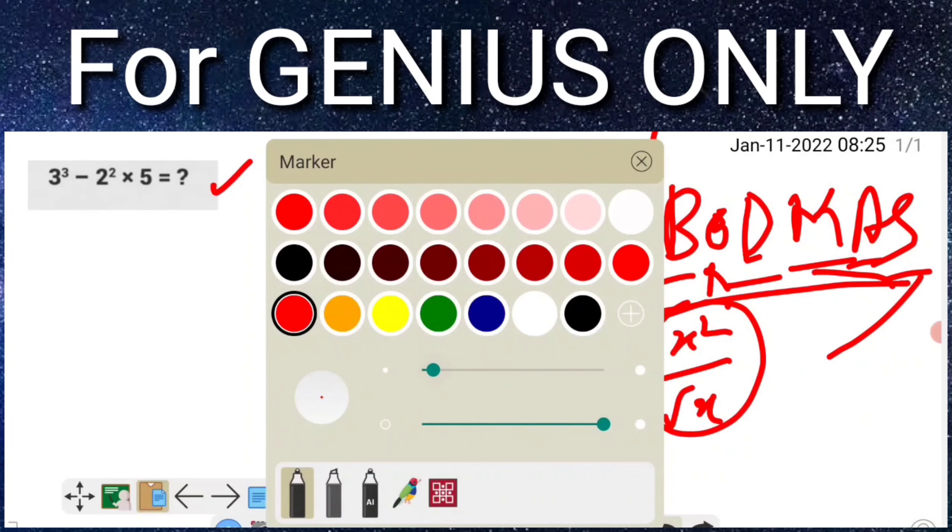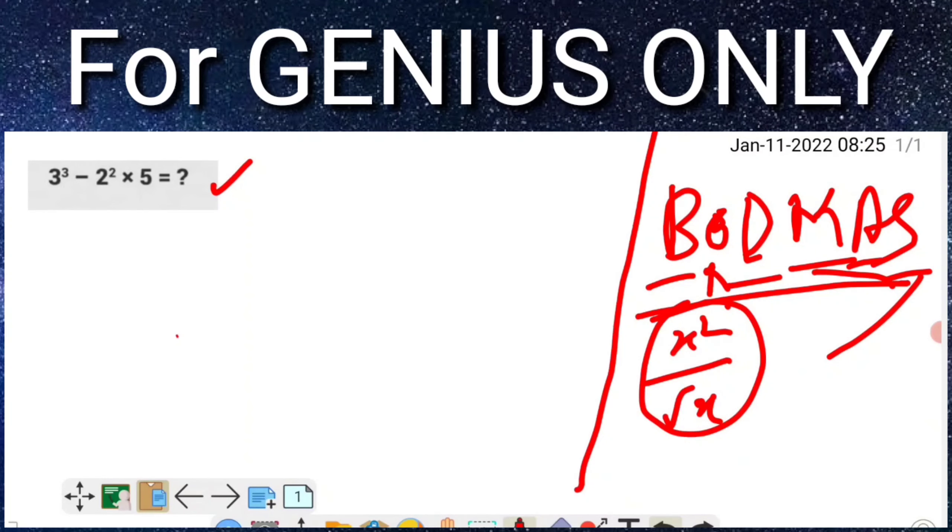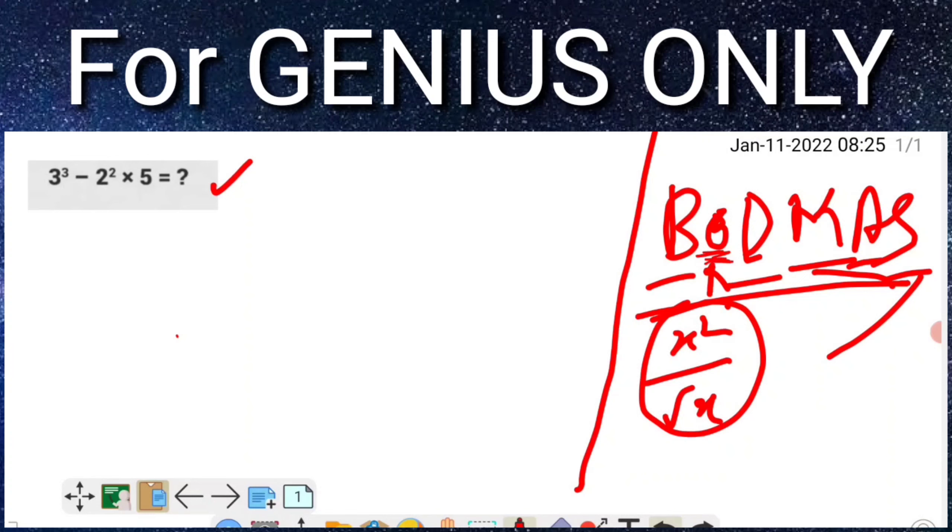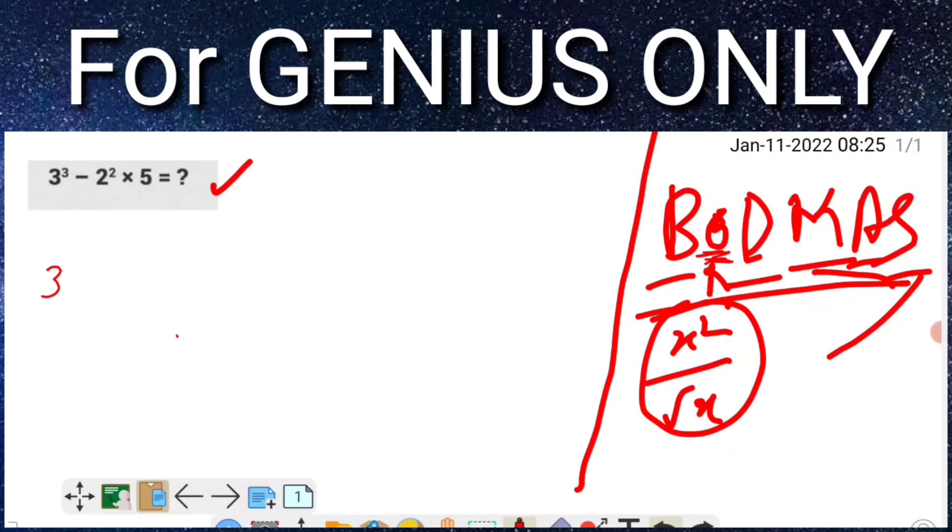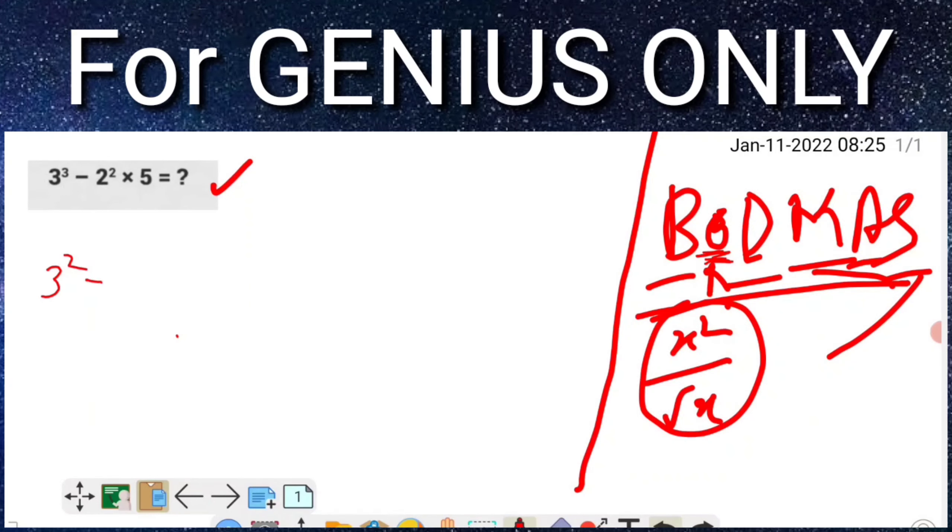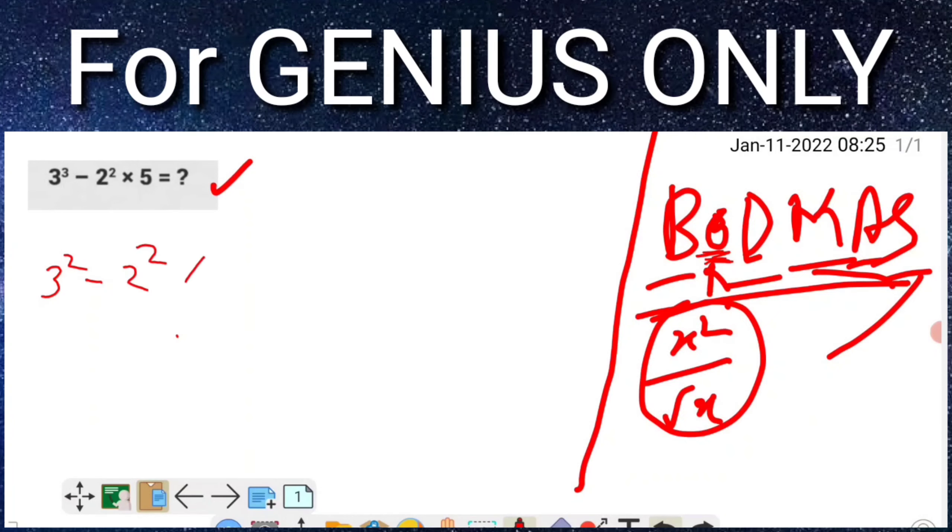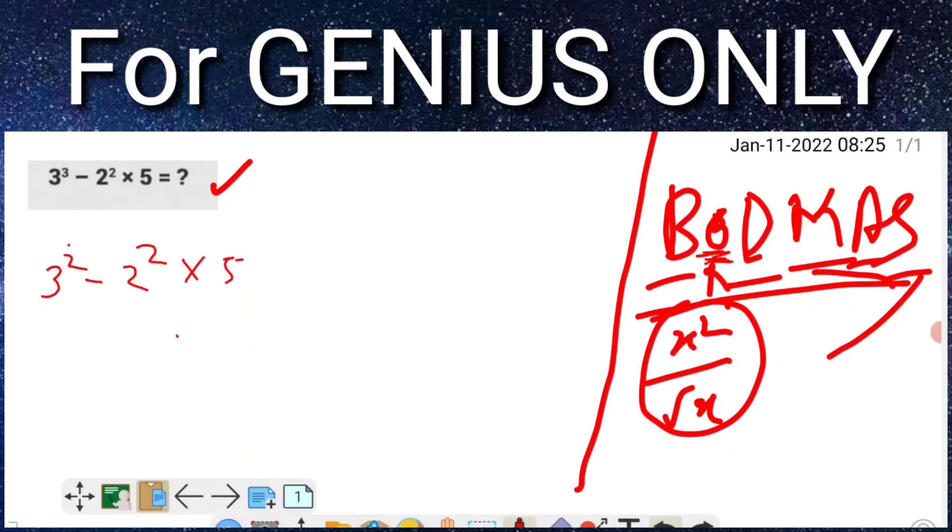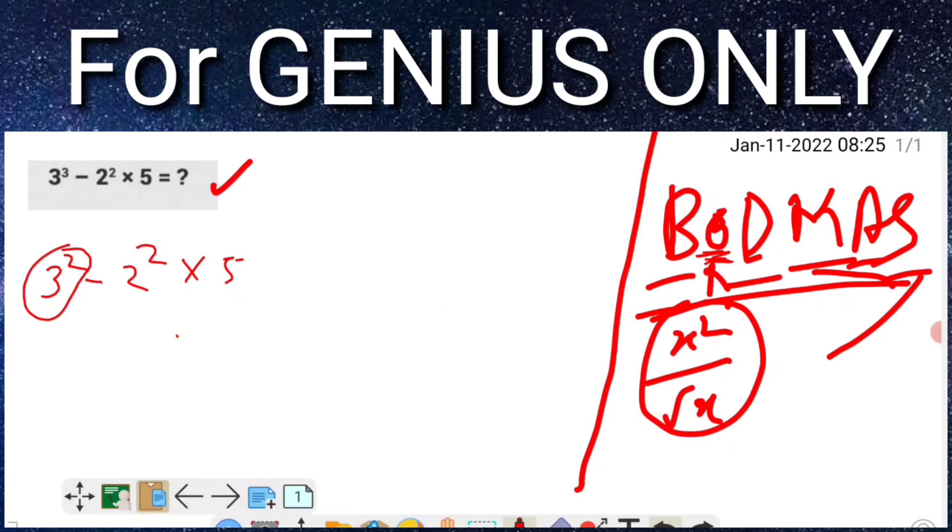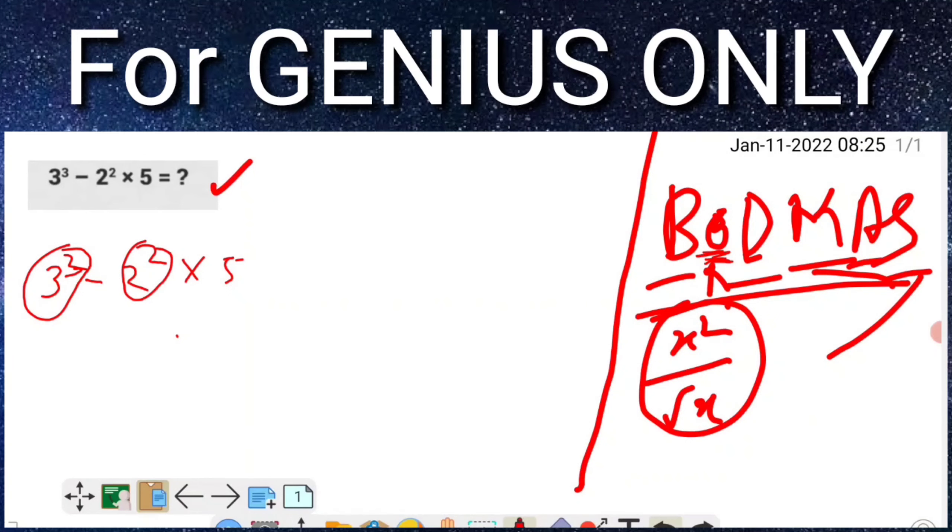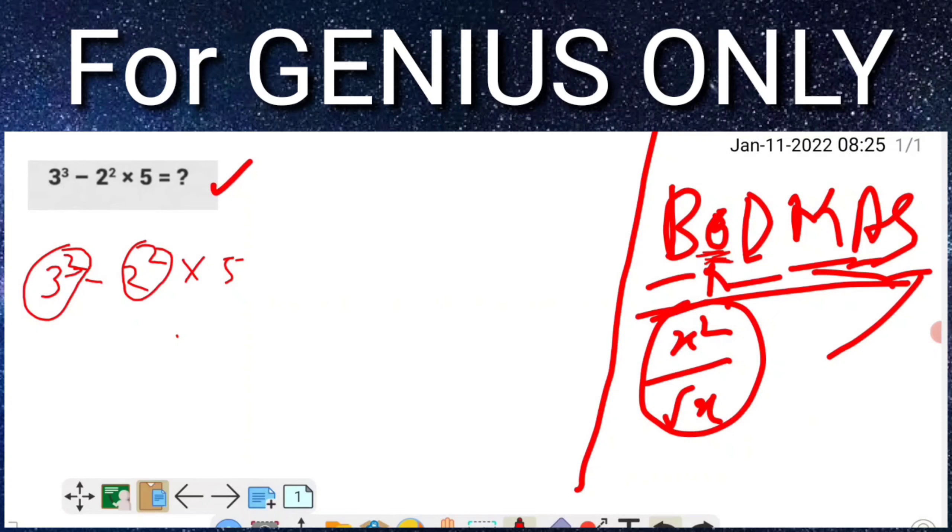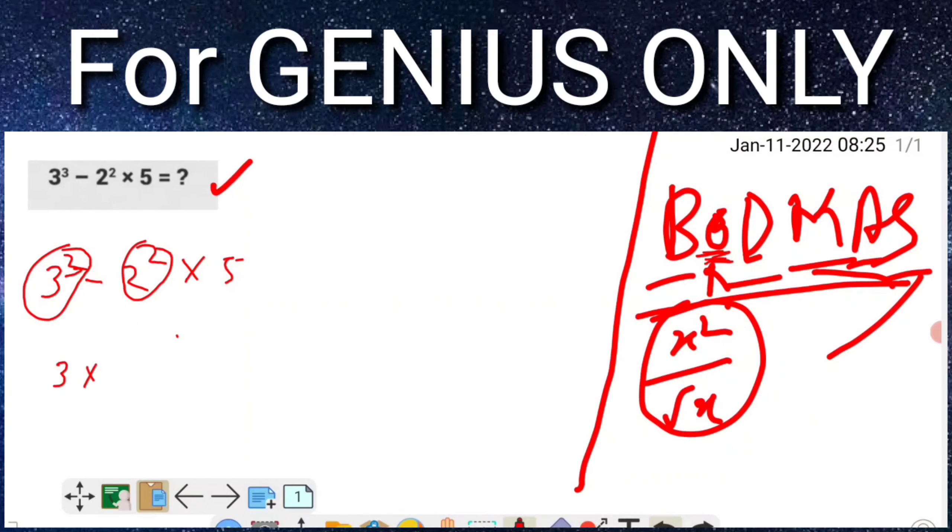So friends, now we are going to solve. What will we do first? We will solve the square first: 3 squared, and 2 squared multiply 5. What we will do first is this one and this one, and after that multiplication, and last subtraction.